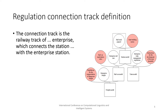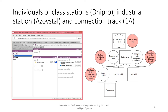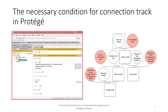The model of tracks compliant and non-compliant to UZE regulation, UZE station tracks and enterprise tracks, and the model of UZE regulation. The definition from the technical operating rules as a restriction for the ontology is the connection track with the railway track of enterprise, which connects the station with the enterprise station. The individual 1A of the connection track subclass of rail track class was linked with individual Azov Style of enterprise station class and individual Dnipro of UZE station class, which complies with the restriction of the subclass soft section of a target.